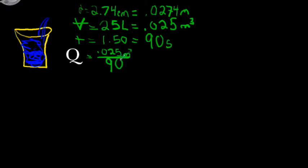I'm going to take my 0.025 and divide it by 90 seconds. When I divide it out, I get an answer that is 2.78 times 10 to the negative 4th cubic meters per second. And that's my volume flow rate right there.